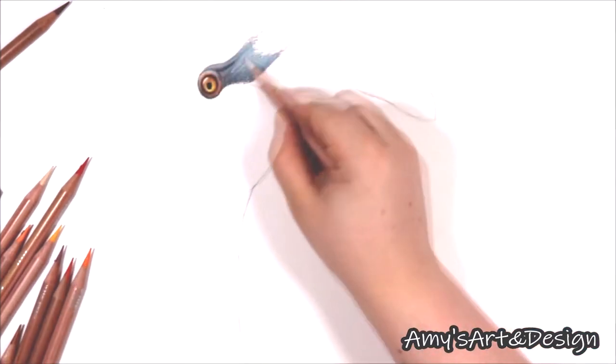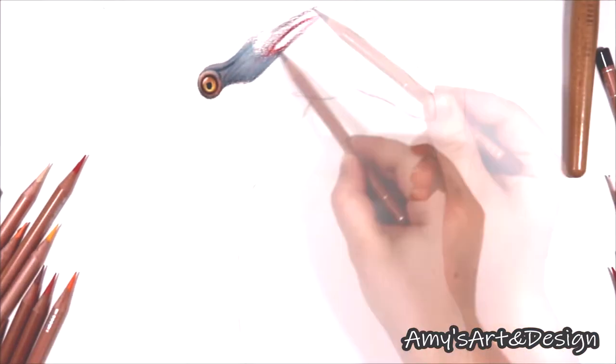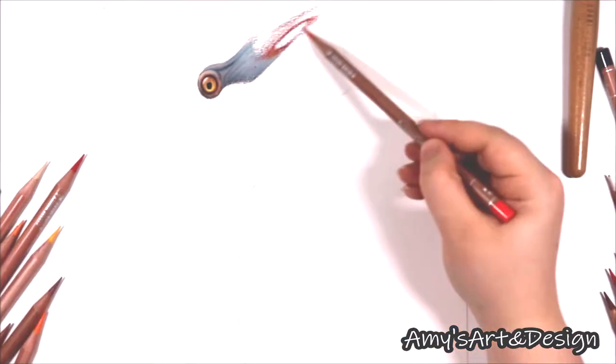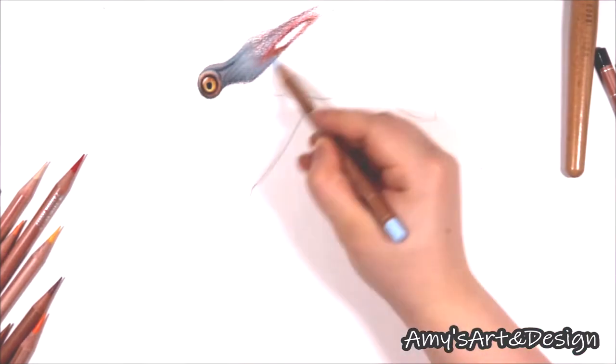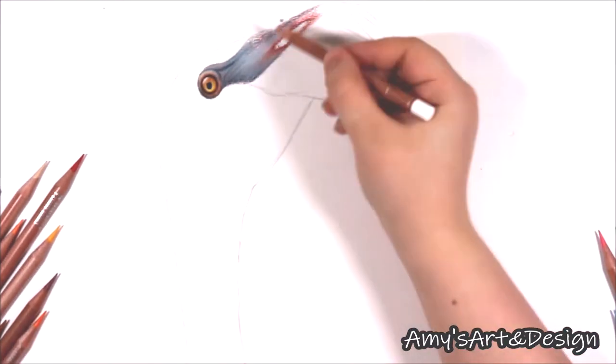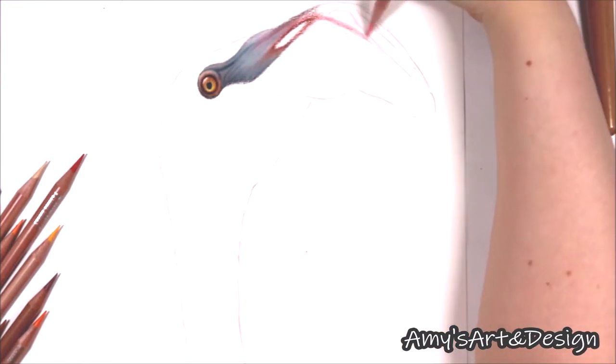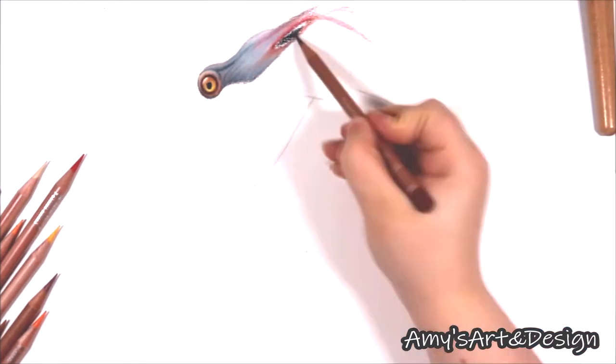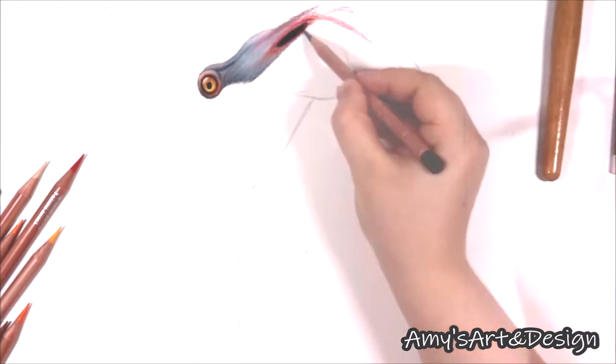First of all a lot of people when they think of flamingos automatically get a vision in their head of this bright pink bird. The first thing I noticed when I was analyzing the reference photo was just how much brown, yellow, orange and red tones were in the flamingo. So that is the first tip that I have, just to make sure that you really are studying your reference photos properly with a bird like this because there are actually a lot of beautiful colours in them.